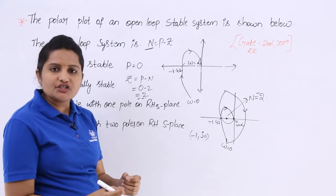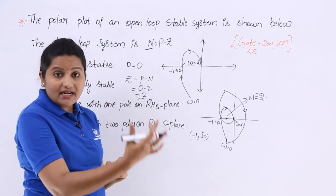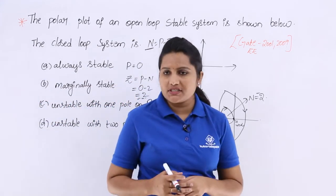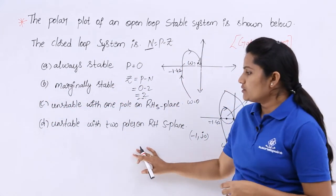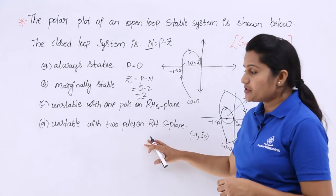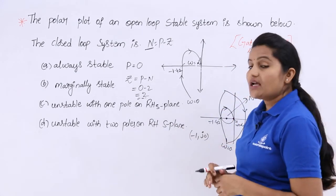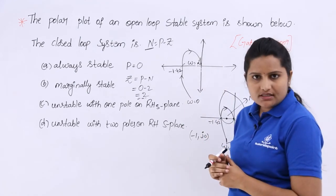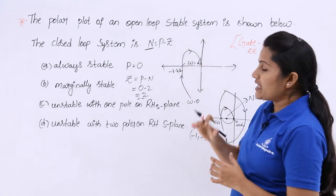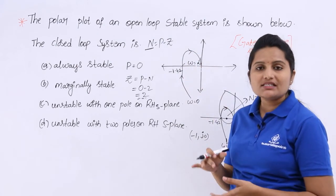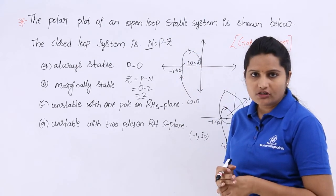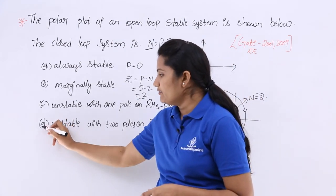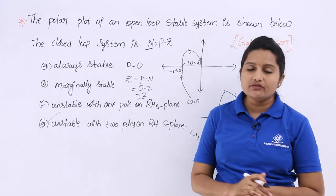Whenever a transfer function has right-sided zeros, that system is said to be unstable. Looking at the options, option D is the correct answer: unstable with 2 poles on the right half of S-plane. So this system with the given open loop transfer function, when converted to closed loop, will be unstable with 2 poles on the right half of the S-plane.